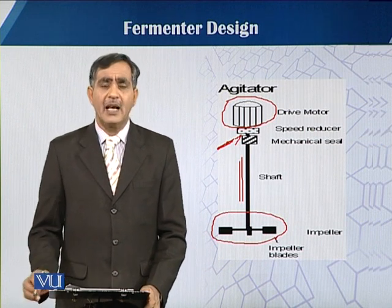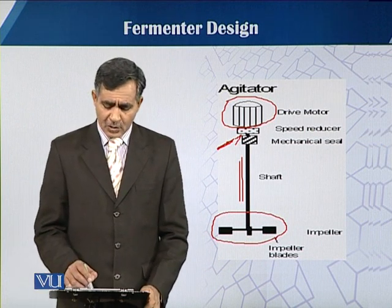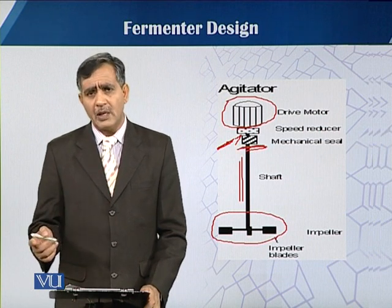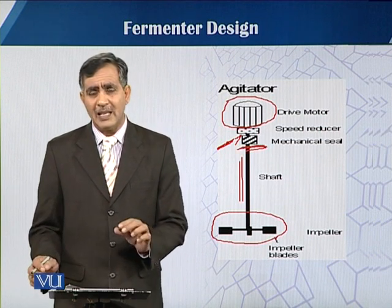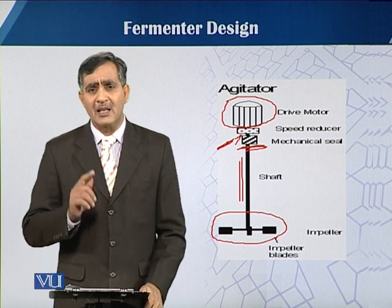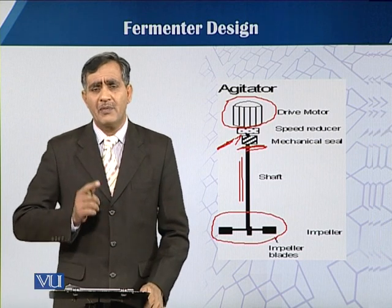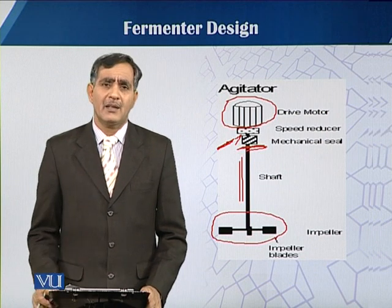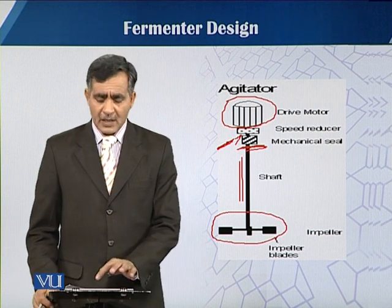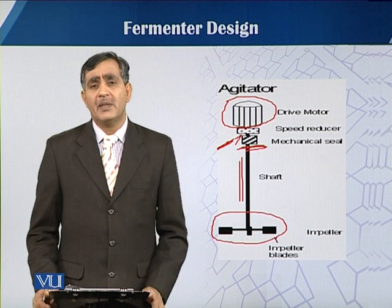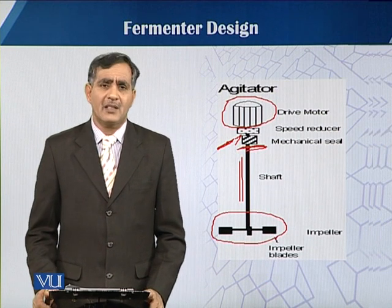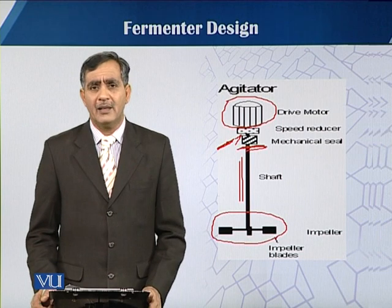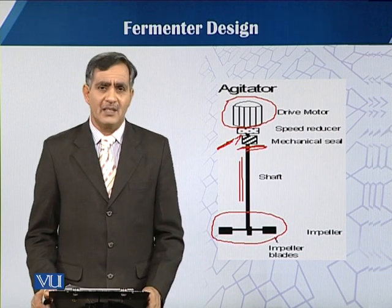The link of this agitation system to the fermenter is through the seal, as mentioned in the previous module. The seal is very critical because there is a continuous process of agitation. If the seal is not good, there is a chance of contamination; with a good seal, we have a good and reliable agitation system.